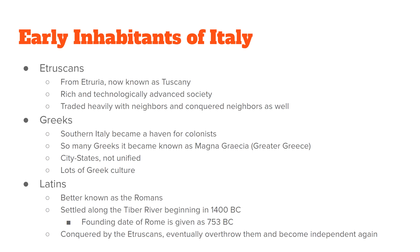The Etruscans traded heavily throughout the Italian peninsula and the Mediterranean. Their main trading partners were the Greeks and the Carthaginians, who lived in northern Africa. This trade brought them into contact with many cultural influences outside Italy. The Etruscans borrowed very heavily from the Greeks — they borrowed art, pottery, their system of government including the idea of the polis, and also religion: Zeus becomes Jupiter, Hera becomes Juno, Athena becomes Minerva, and so on.